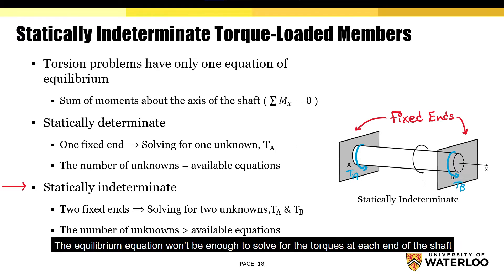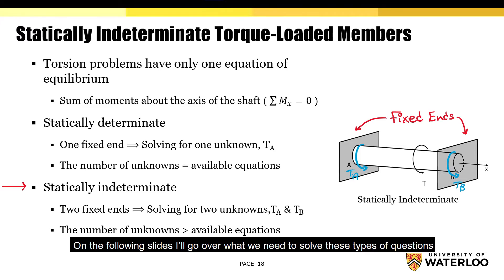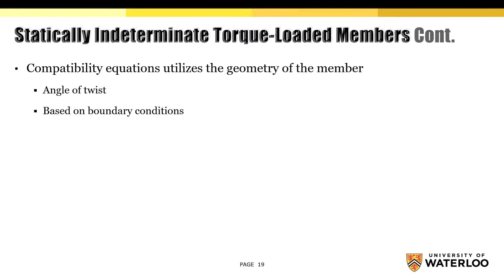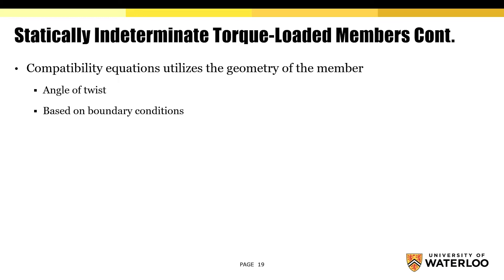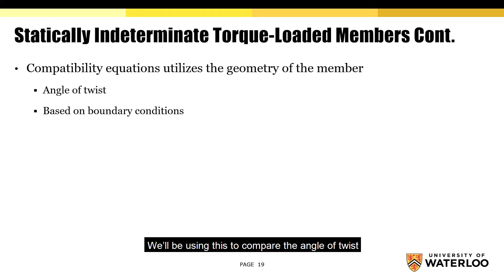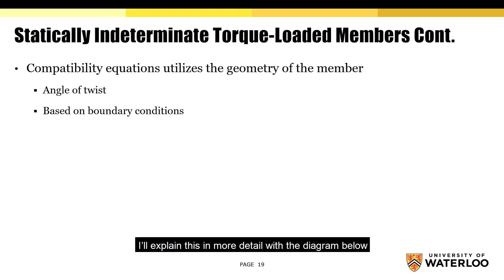As you might be able to tell, the equilibrium equation won't be enough to solve for the torques at each end of the shaft, so we'll need to consider a few more things before we're able to solve for these unknowns. On the following slides, I'll go over what we need to solve these types of questions. Before I go over the general procedure, I want to cover the concepts we'll be using. I'll start off with the compatibility equations, which we'll use to compare the angle of twist within the various segments based on the boundary conditions.